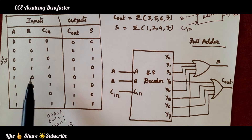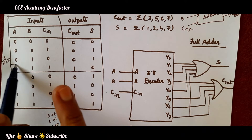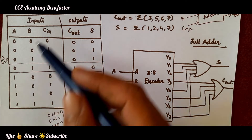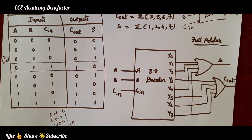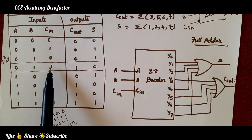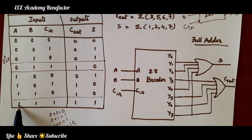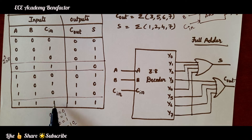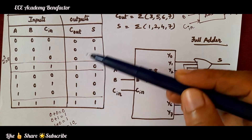Let us quickly take one condition — for 0, 1, 1 — how we get the output. Here you add 0 plus 1: 0 plus 1 is 1, then 1 plus 1 is 10, so sum is 0 and carry is 1. For another example: 1 plus 1 is 1, then 0 plus 1 is 1, so C-out is 1 and sum is 1. In this way we complete the C-out column and sum column.